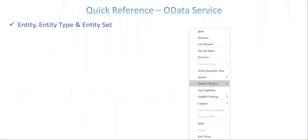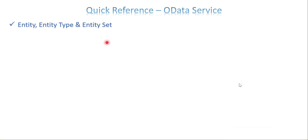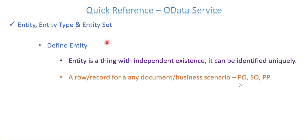Once you start designing the OData service, you come to know these three things: entity, entity type, and entity set. Having a good understanding of these three things makes it very easy to understand the questions. So first: what is an entity? Entity is a thing that has independent existence — it can be identified uniquely. At the OData level, it can be a row or a record of any business document — a PO, sales order, or purchase order. It has many relevant fields belonging to one business scenario.